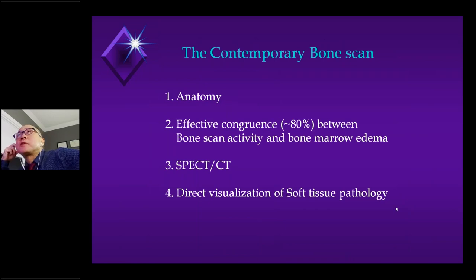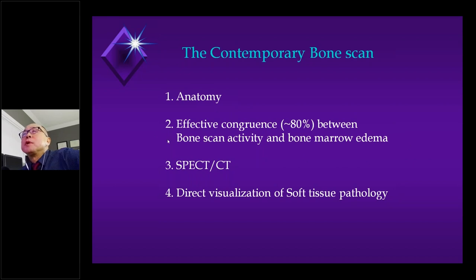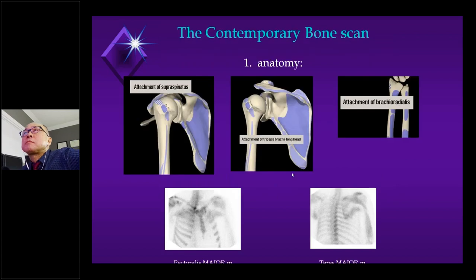That was a quick tour of classic scintigraphy — nothing you don't already know. I really want to focus on what I consider the contemporary bone scan, with these key points: we have to emphasize anatomy; we can see bone marrow edema on a bone scan — not often emphasized in our literature; there is heavy use of SPECT-CT; and occasionally you can directly see soft tissue pathology with our bone tracer. If you can recognize tendon attachments, you will make the correct diagnosis when you see a focus in an unusual location.